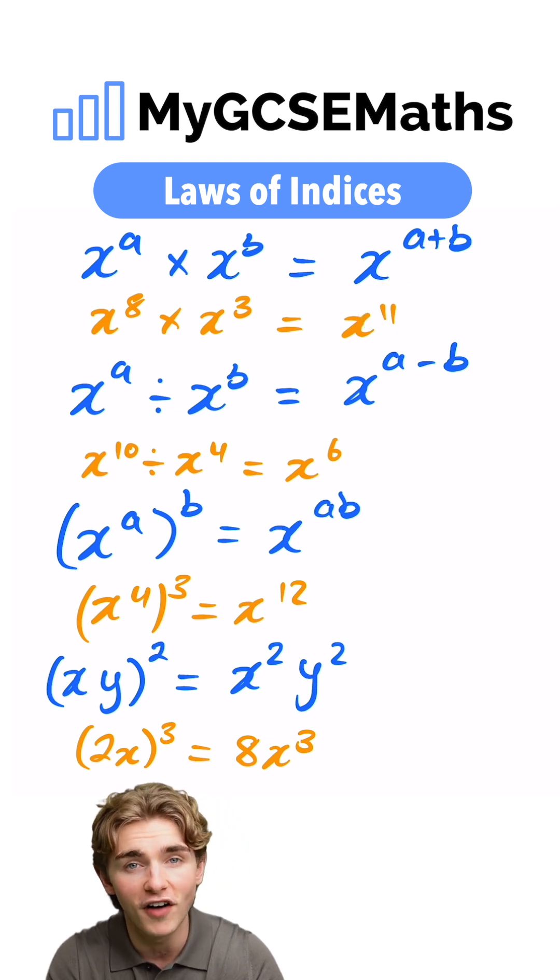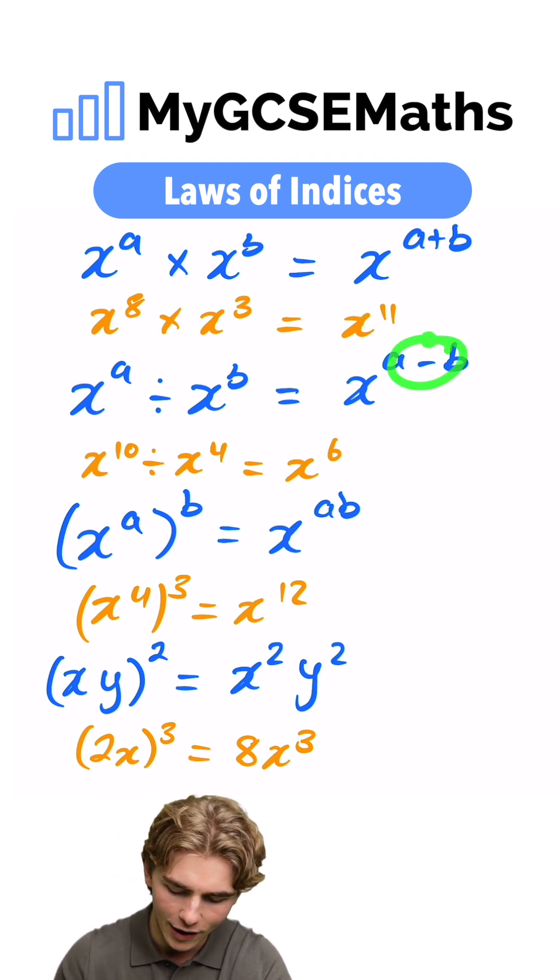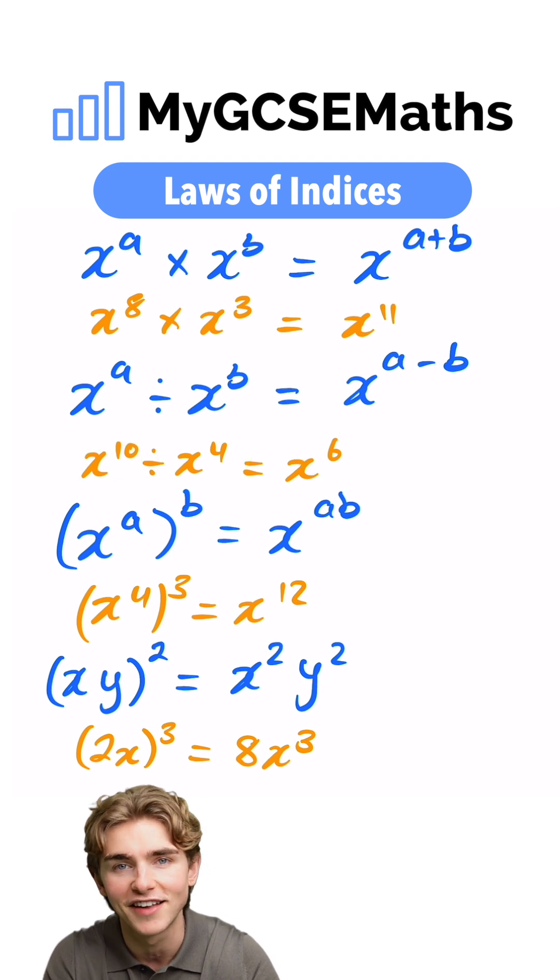What about dividing? When we divide, we're going to subtract the powers. For example, x to the 10 divided by x to the 4. 10 take away 4 gives us 6, so it would be x to the 6.